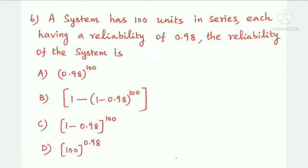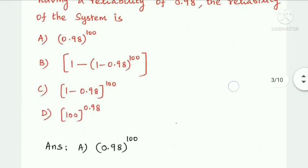Next question: a system has 100 units in series, each having a reliability of 0.98. The reliability of the system is 0.98 to the whole power 100. Option A is the answer: 0.98 whole power 100.